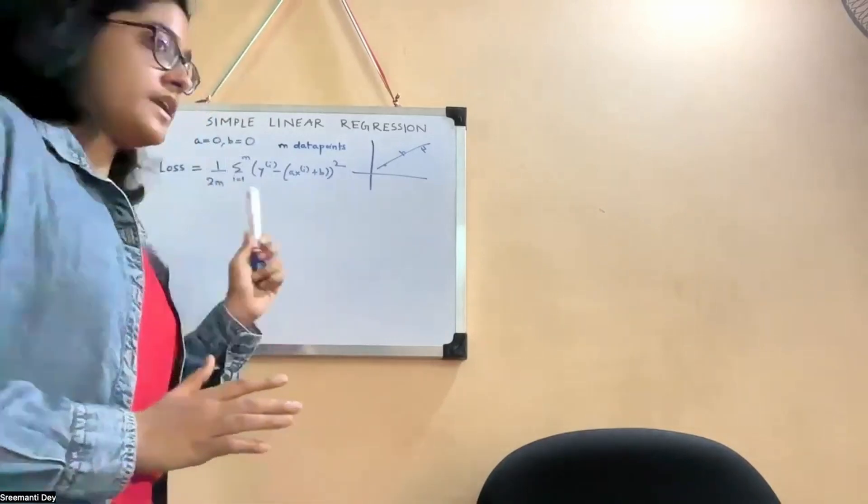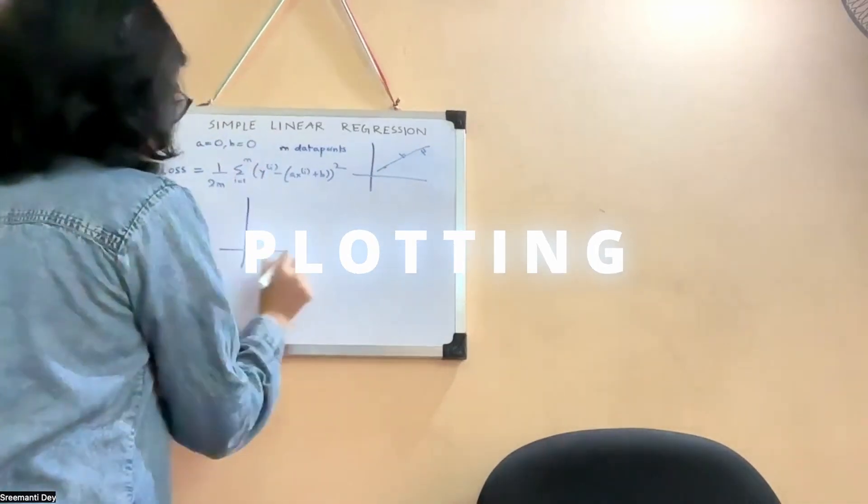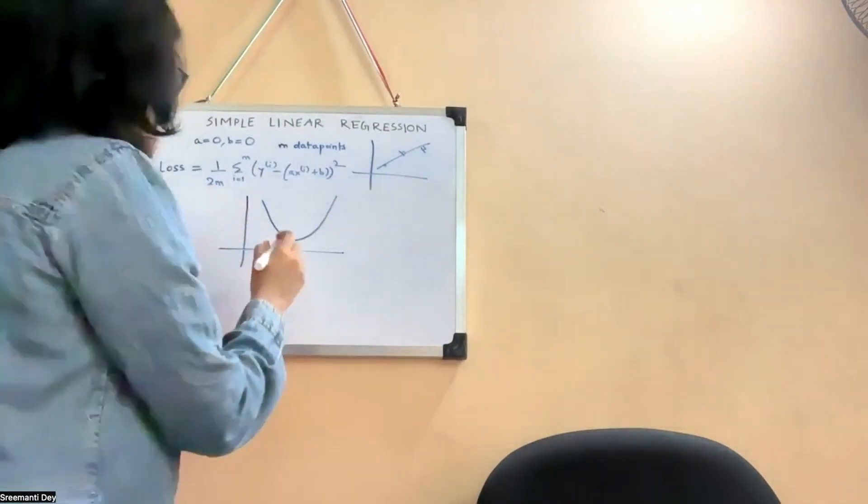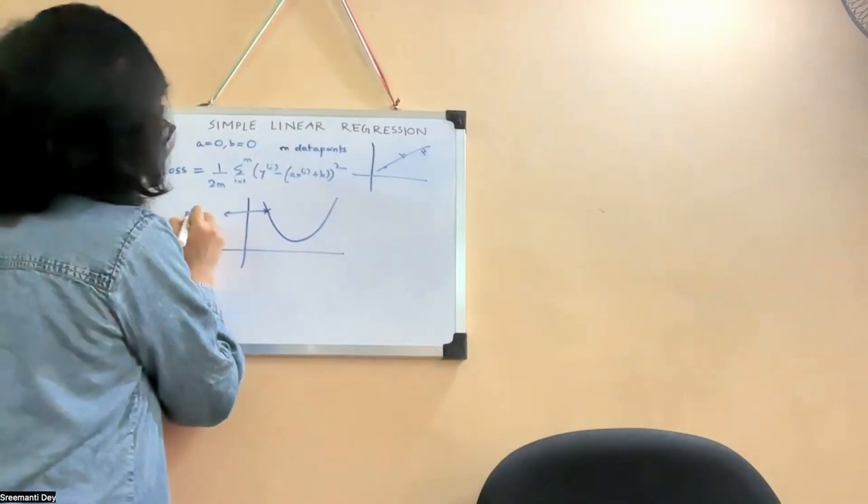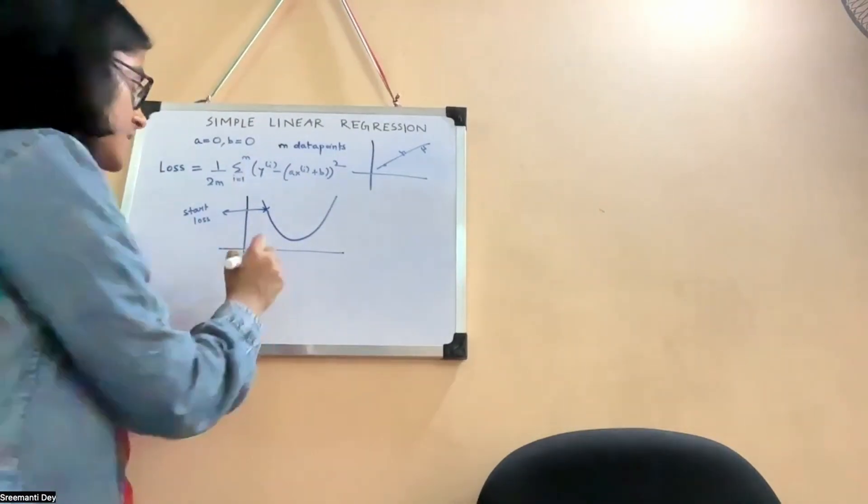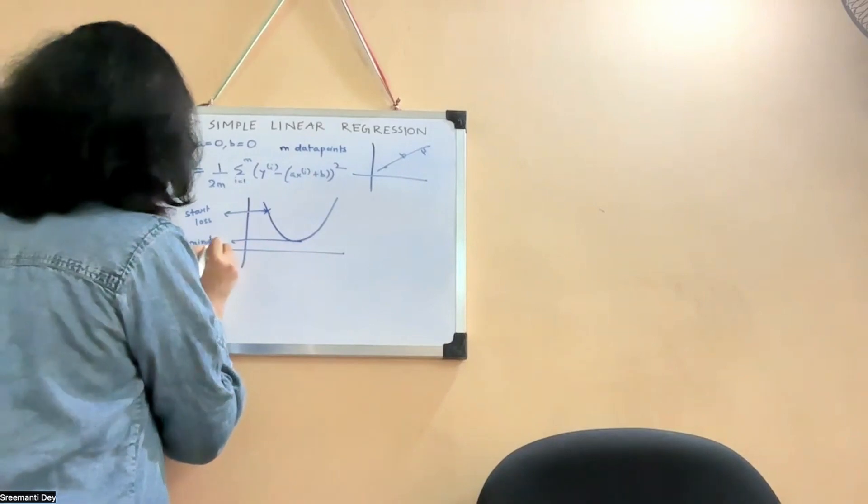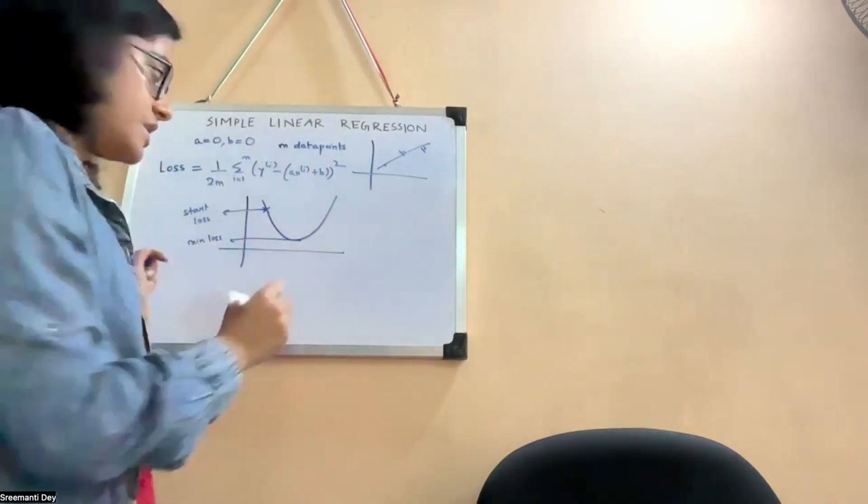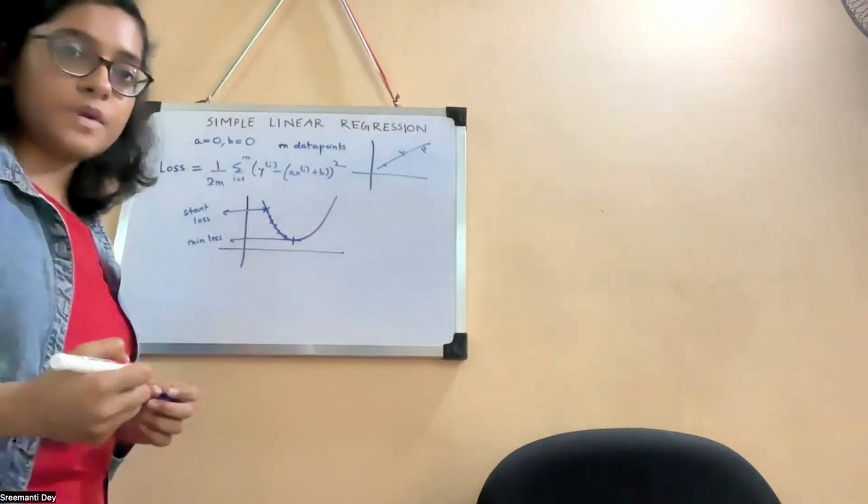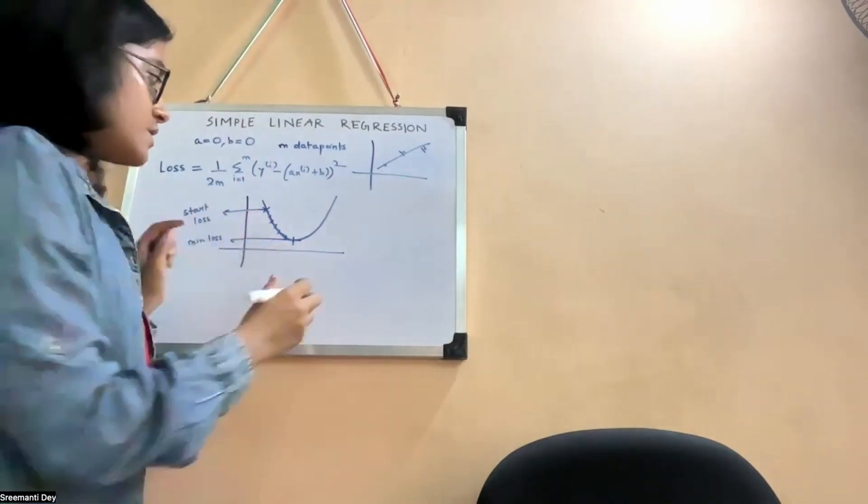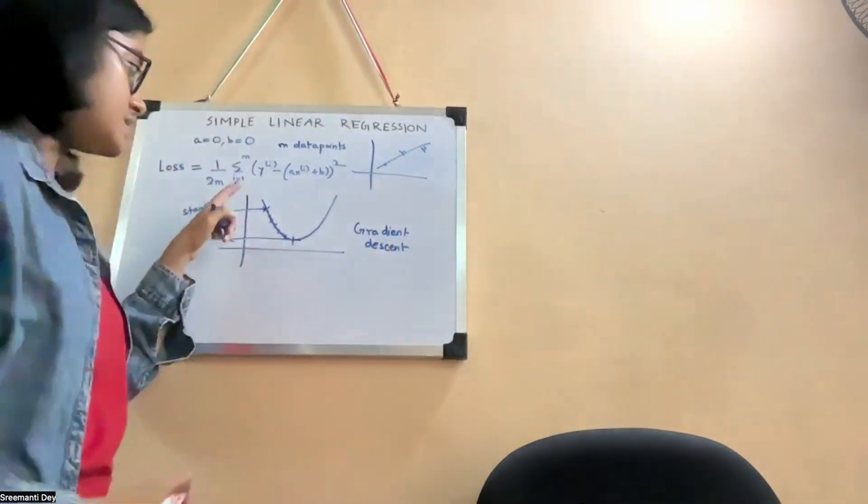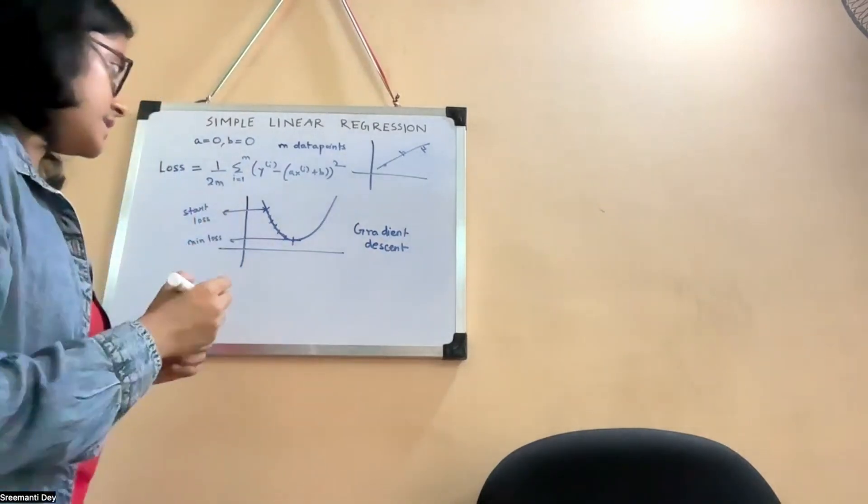So now plotting this loss function. This would be the plot of the loss function. We are currently at this stage, which is the starting loss. It would be obviously high. We can't be at the minimum at the start. So this is the minimum loss. And our purpose is by each iteration, slowly, slowly, we want to get to this point. We want to get to the minimum loss. So this is what is called the gradient descent, because we are descending along the gradient. This is our target basically.